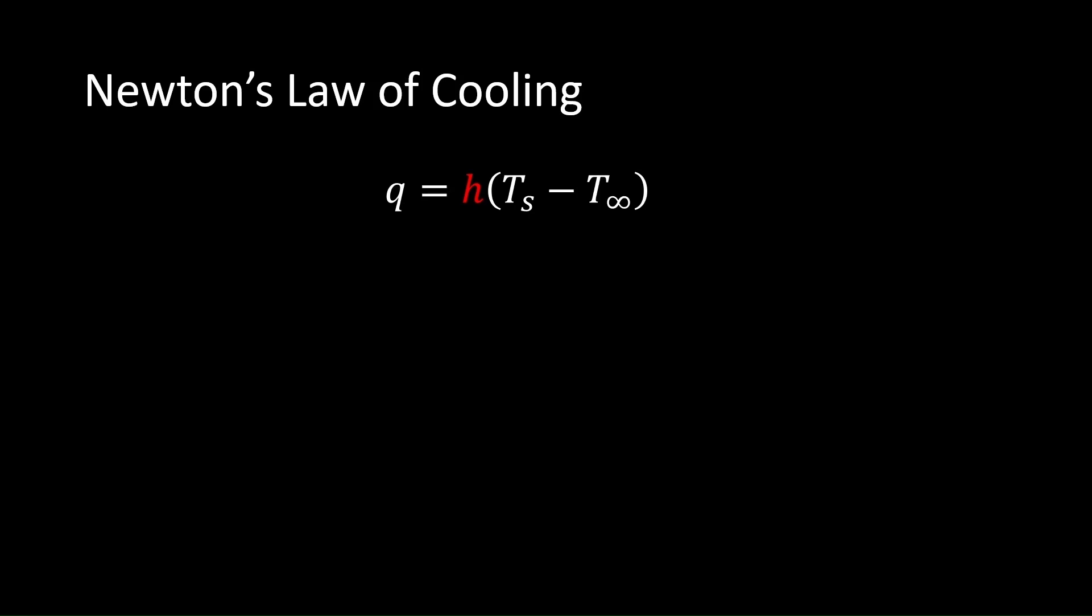Often, this coefficient is difficult to measure and is obtained from empirical methods. An example of one such equation is given below, for forced convection across an isothermal plate, where Nu and Pr are dimensionless numbers, which represent fluid properties. We can actually use Nu to determine the heat transfer coefficient h.